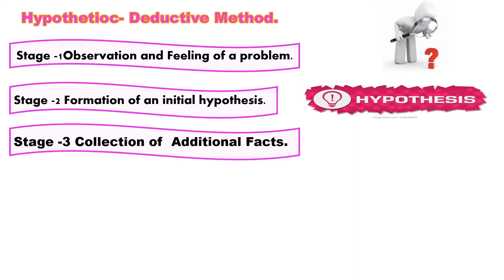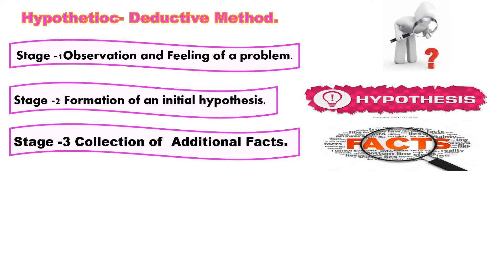The third stage is the collection of additional facts and modification of the hypothesis if necessary. A hypothesis is a guess, and a scientist has to find out whether the guess is supported by facts. Using the hypothesis as a guide, the scientist observes new facts relevant to the problem. If the additional facts support the hypothesis, it is accepted; if they do not, the hypothesis is either modified or rejected and a new hypothesis takes its place. In most cases, a number of hypotheses are rejected before the correct solution is found.